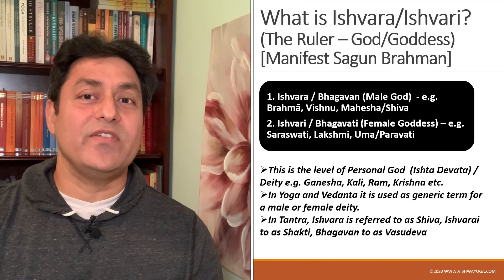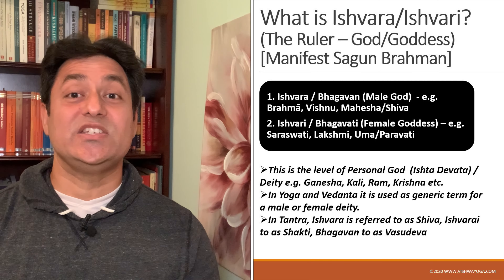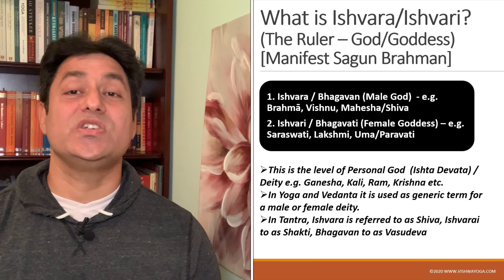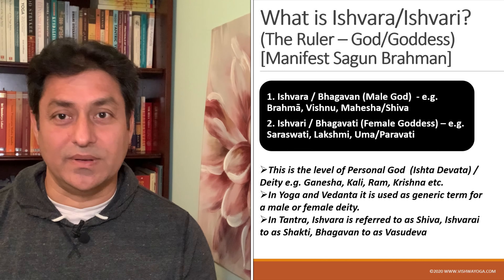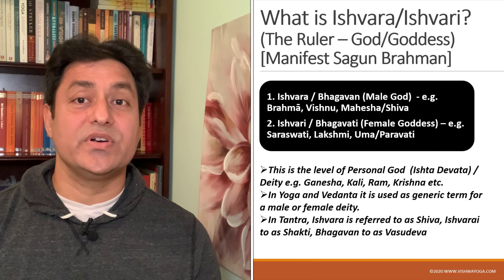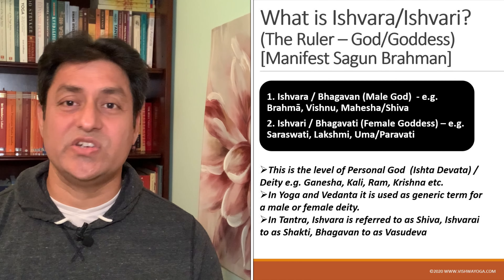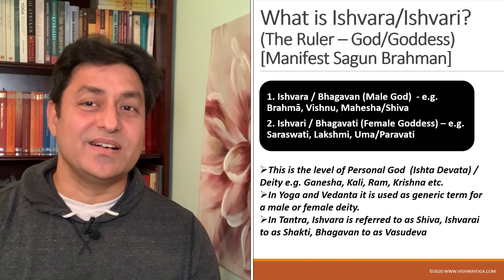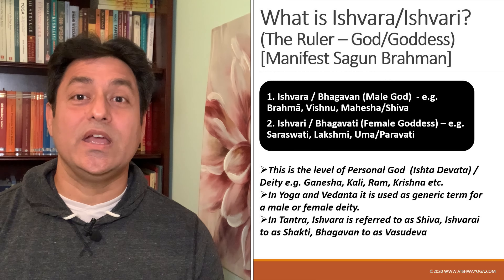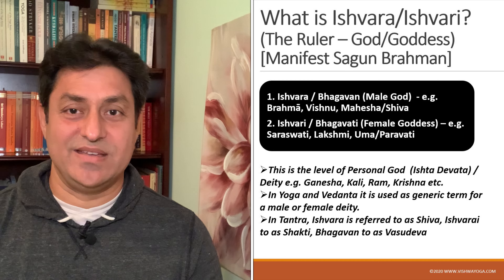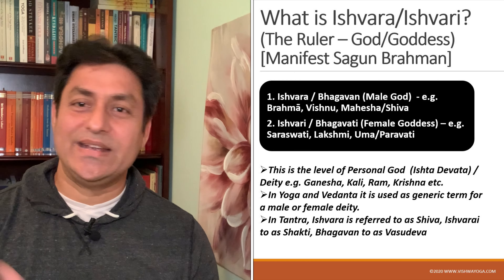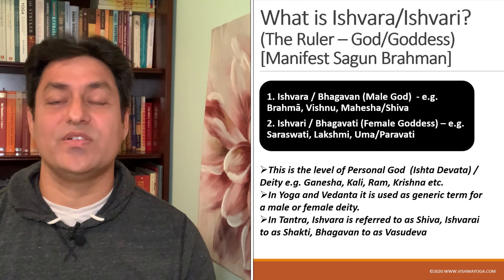In Yoga and Vedanta, it is used as a generic term for a personal deity or Ishta Devata — for example, Ganesha, Kali, Durga, Ram, Krishna, Hanuman, etc. But in Tantra, Ishwara is referred to as Shiva, Ishwari or Bhagavati as Shakti, and Bhagavan as Vasudev. I hope that gives you some clarity about these words.